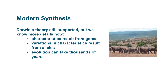The modern synthesis is that Darwin's theory is still supported by a huge amount of evidence, but we know more details now than he did in the 1800s when he published his theory. We now know that genes are where these characteristics come from. Variations in characteristics are the results of alleles — remember we talked about alleles when we discussed Mendelian genetics, so go back over the lectures and readings from those sections if you need a refresher.